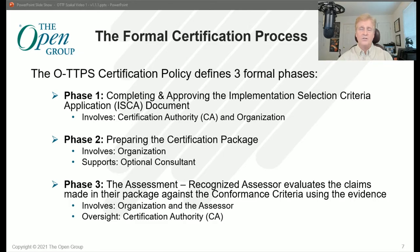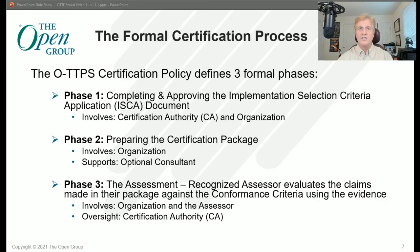Implementation evidence is supported by artifacts that show how the required process has been applied to the selected representative products. Should the assessor determine that the claims are not supported by the evidence, then the organization must remediate the unsubstantiated claims and implement the missing necessary controls and practices. This can be avoided if your organization follows the best practice journey previously discussed.